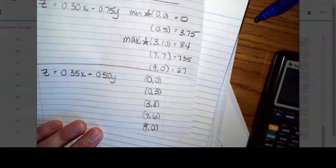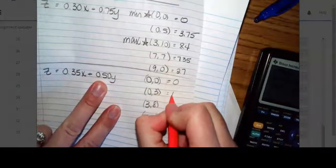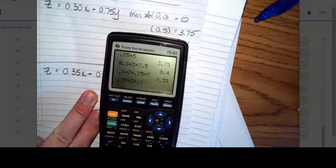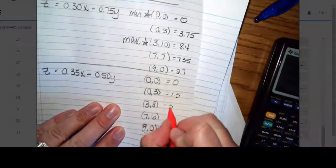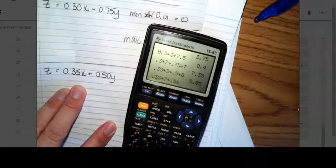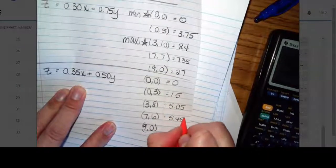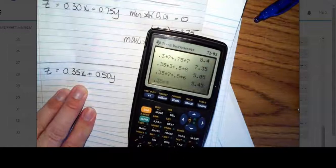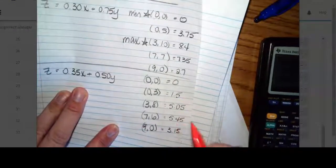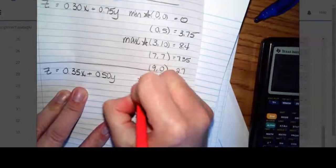So we have, if I zero everything out, it's going to give me a 0. If I do 0,3, I'm going to get 1.5. If I do 3,8, so 0.35 times 3 plus 0.5 times 8 gives me 5.05. Use 7 and 6, so 0.35 times 7 plus 0.5 times 6 gives me 5.45. And then use 9,0, so 0.35 times 9 is 3.15. So which one is your biggest? Your biggest is going to be this one. So that's your maximum. And then what's your smallest? Your smallest is this one, so that's your minimum.